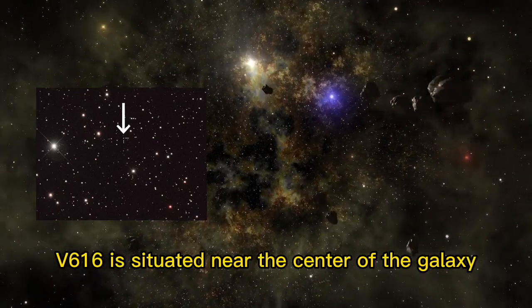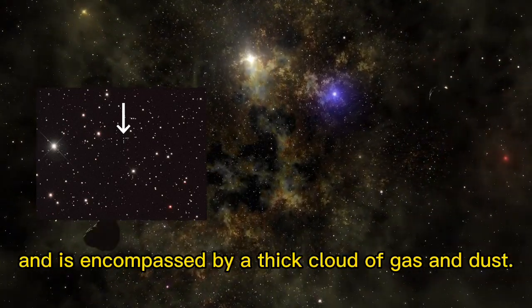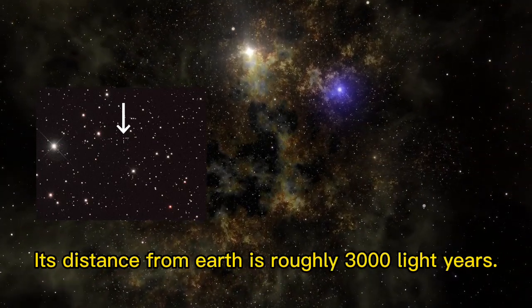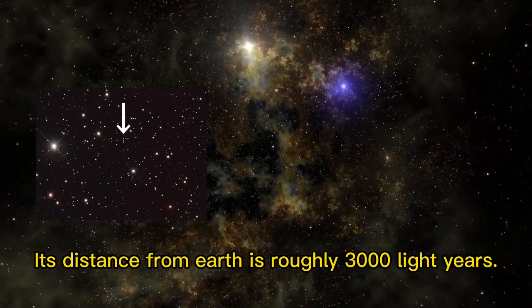V616 is situated near the center of the galaxy and is encompassed by a thick cloud of gas and dust. Its distance from Earth is roughly 3,000 light years.